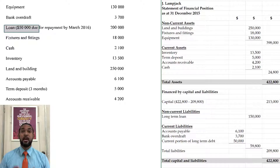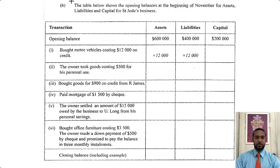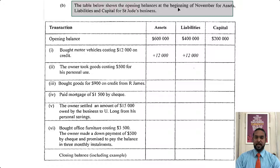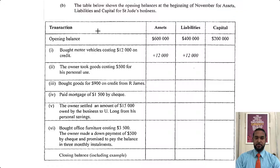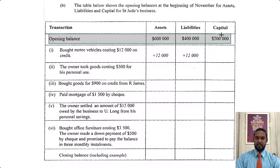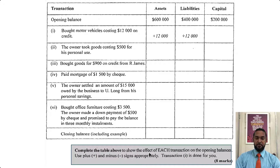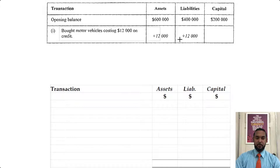Let me switch screens and go on to the next part of the question. This is part B. It says the table below shows the opening balances at the beginning of November for assets, liabilities, and capital for St. Jude's business. We have three columns — assets, liabilities, and capital — and a bunch of transactions. Complete the table to show the effect of each transaction on the opening balances using plus and minus signs appropriately. Transaction one is done for you.